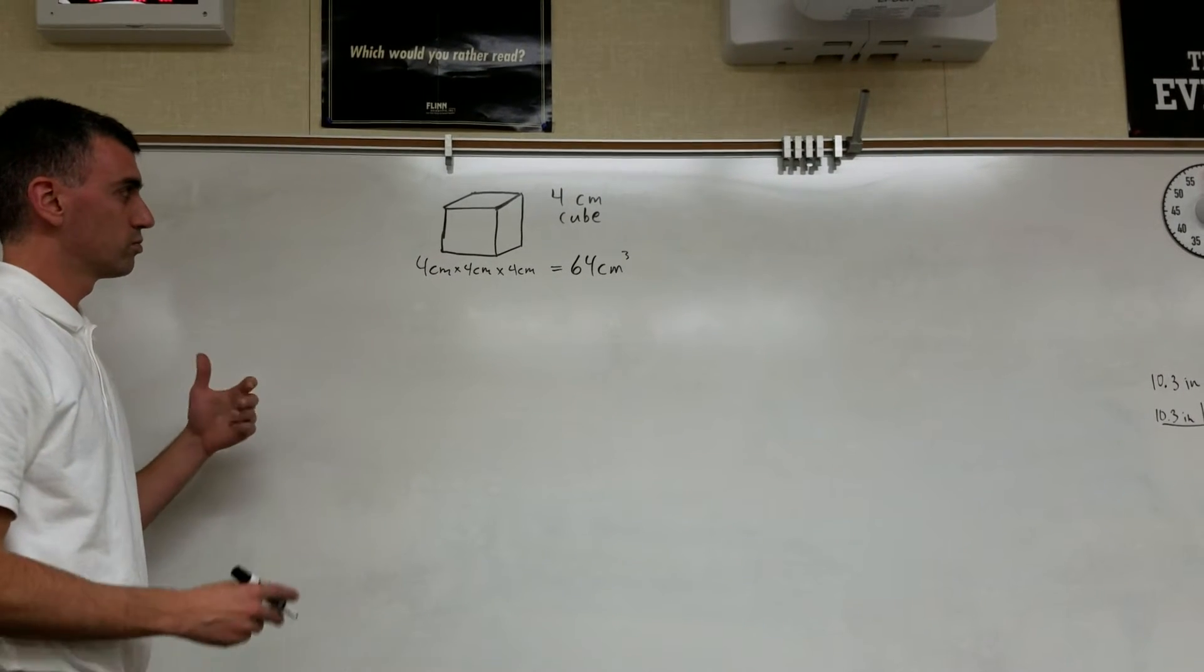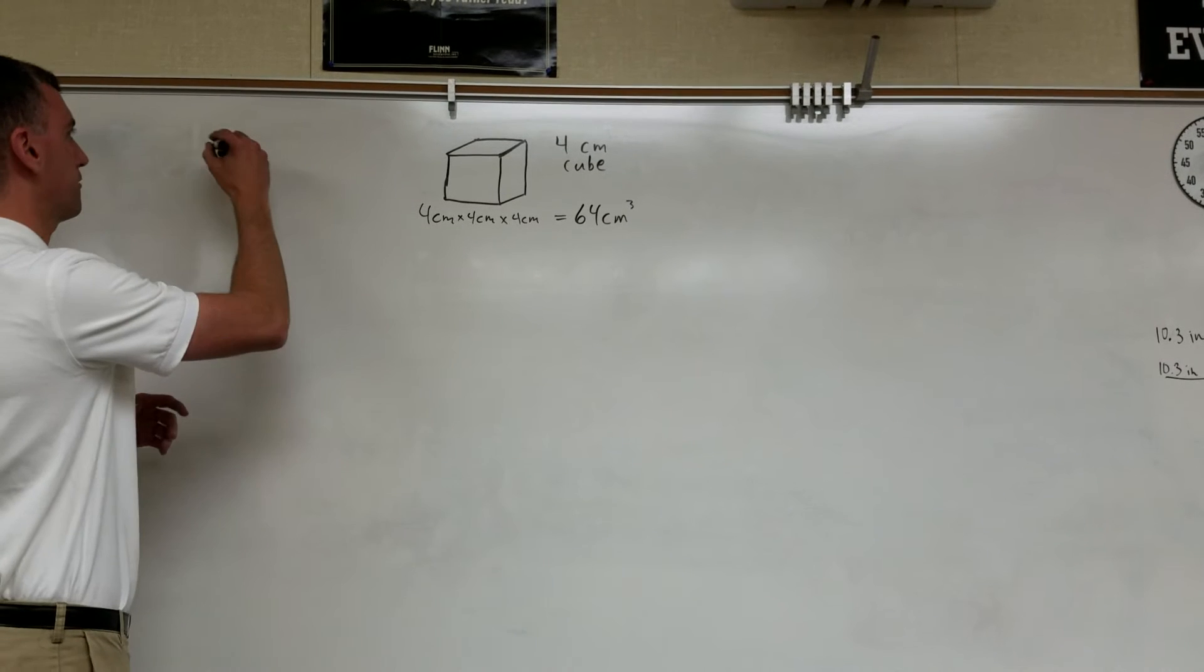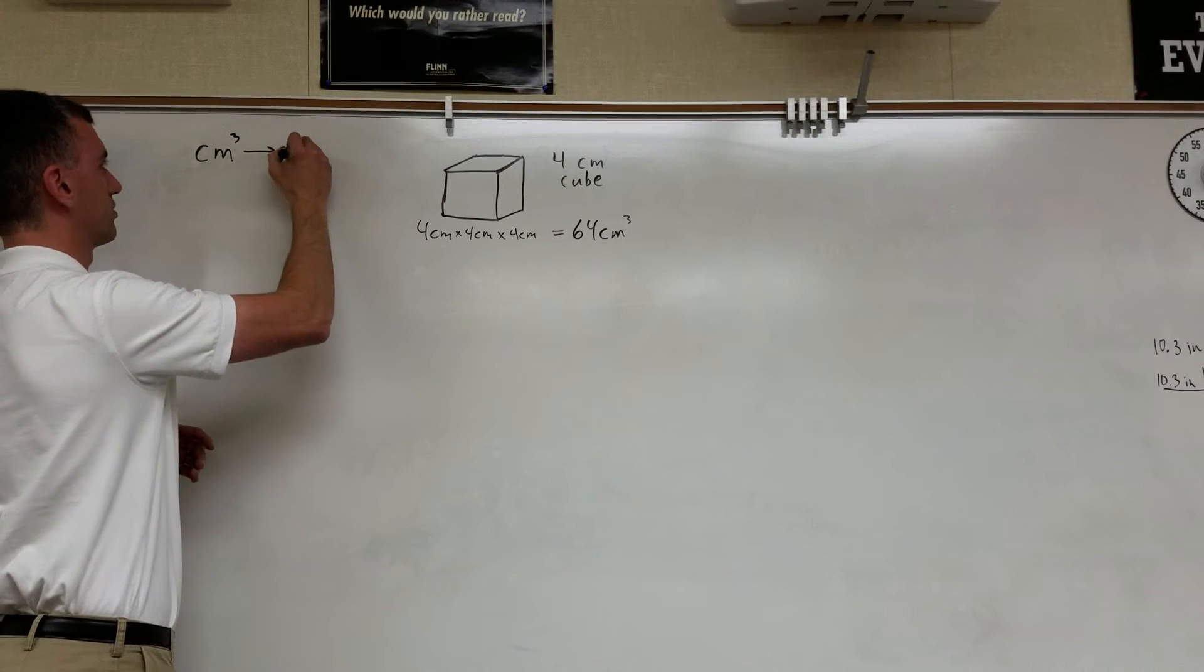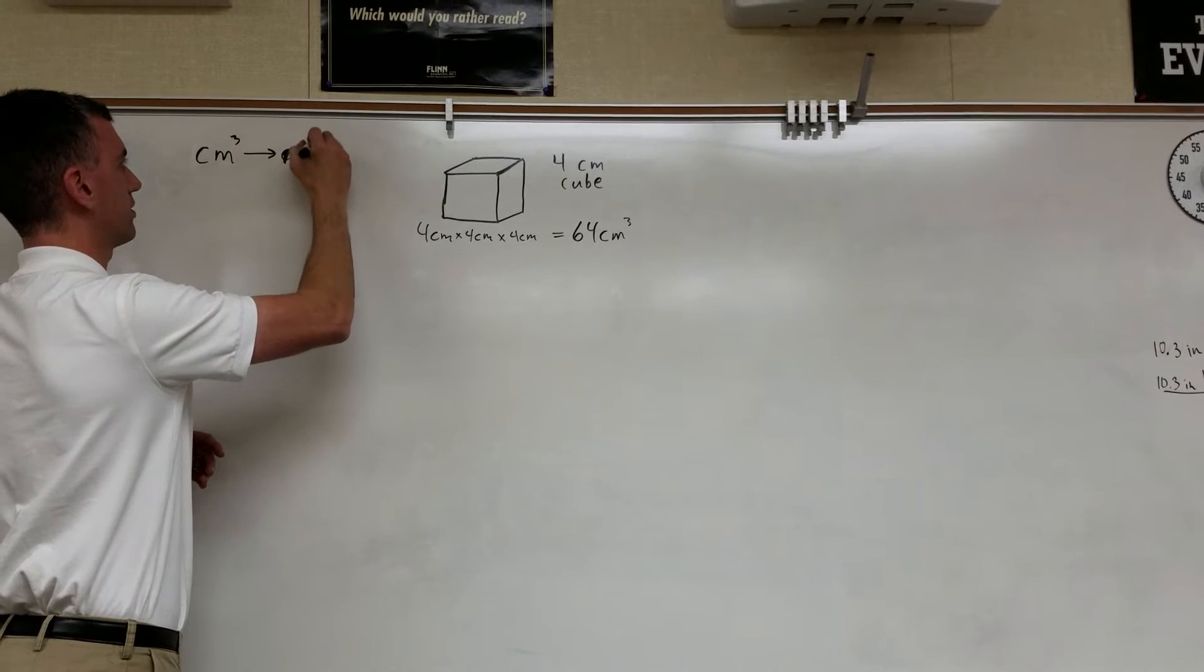Notice the behavior of the units, where centimeters times centimeters times centimeters equals cubic centimeters. That's a property that's going to be very important for helping us find what we need here. The volume of this cube is 64 cubic centimeters. Let's do a conversion from cubic centimeters to cubic meters.